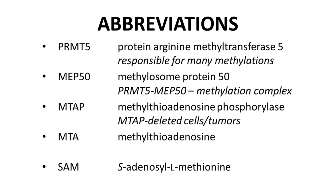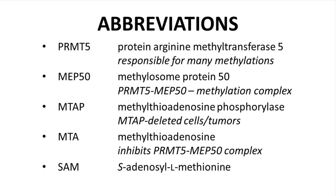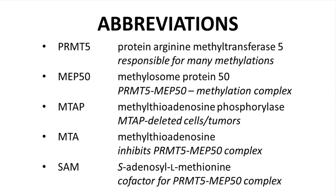Certain cancer cell lines lack the MTA-P gene. These are MTA-P or MTAP-deleted cells. MTA is methyl thioadenosine. MTA tends to build to high concentrations in MTAP-deleted cells. MTA binds and shuts down the methylation activity of the PRMT5-MEP50 complex. SAM is S-adenosyl methionine, which binds to and serves as a cofactor for PRMT5-MEP50. All of these proteins and molecules are part of the same pathway.